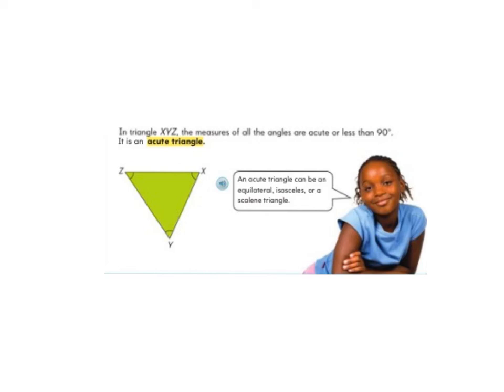An acute triangle can be an equilateral, isosceles, or a scalene triangle.